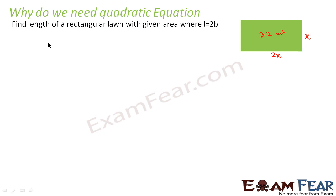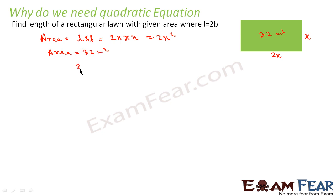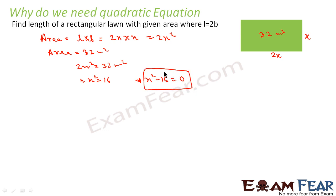We can solve this using a quadratic equation. The area of the lawn is length × breadth = 2x × x = 2x². Since the area is 32, we get 2x² = 32, or x² = 16, which gives x² − 16 = 0. This is a quadratic equation where a = 1, b = 0, and c = −16. I will explain how to solve this in the next slides.